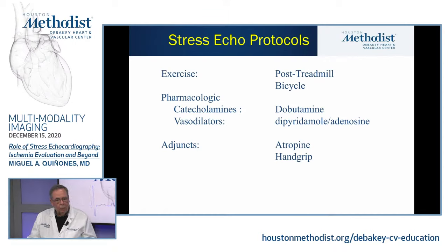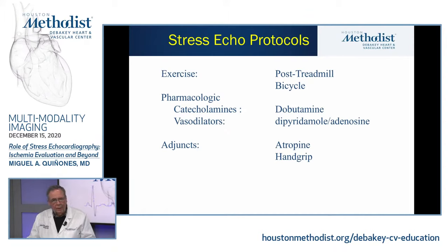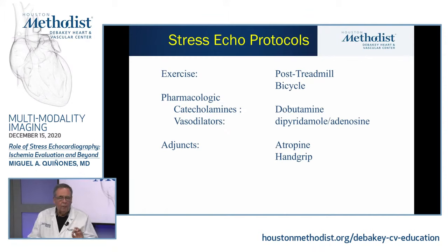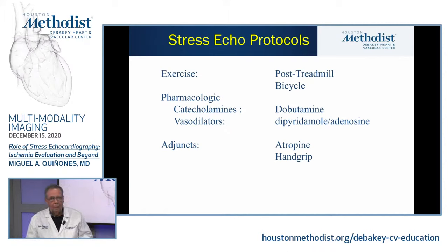We can stress patients by exercise — treadmill or bike — or pharmacologically. Dobutamine, a catecholamine, is the most favored pharmacologic stressor in America. Vasodilators like dipyridamol or adenosine can induce ischemia but with lower sensitivity. With dobutamine, we often add atropine as an adjunct to push heart rate to 85% predicted maximum, and patients may perform a handgrip maneuver to further induce ischemia at a given heart rate.